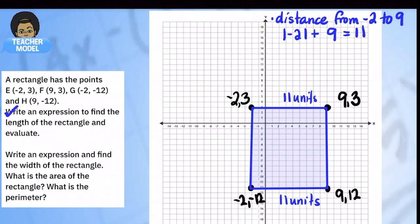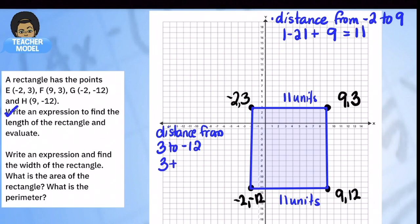Now for the width, we go from y equals three to y equals negative twelve. The expression is: absolute value of three plus absolute value of negative twelve. The absolute value of three is already three, and the absolute value of negative twelve is twelve. Three plus twelve equals fifteen. So the width on both sides is 15 units.